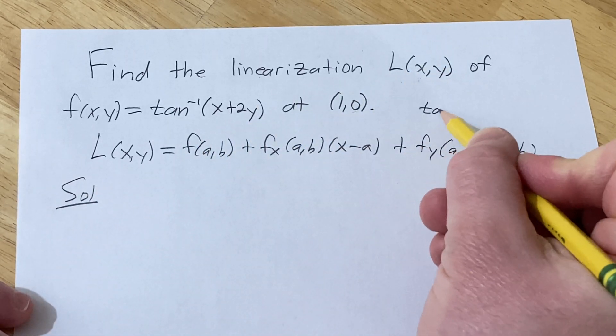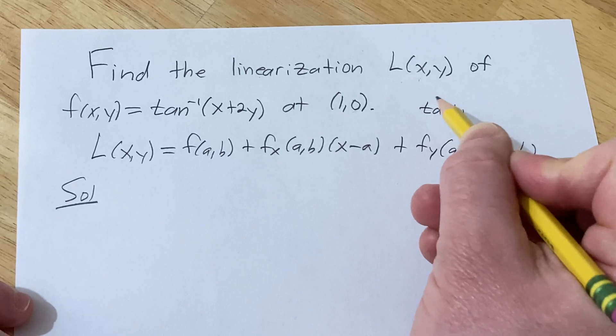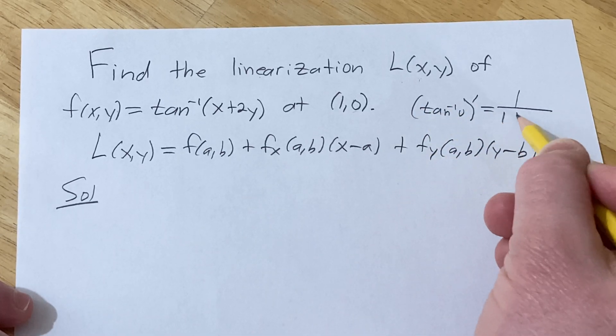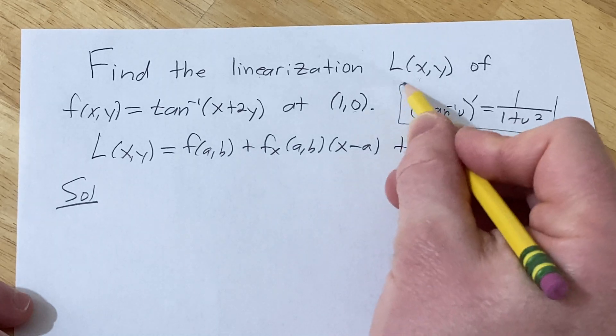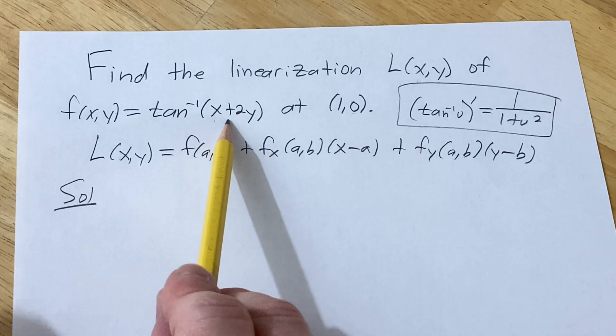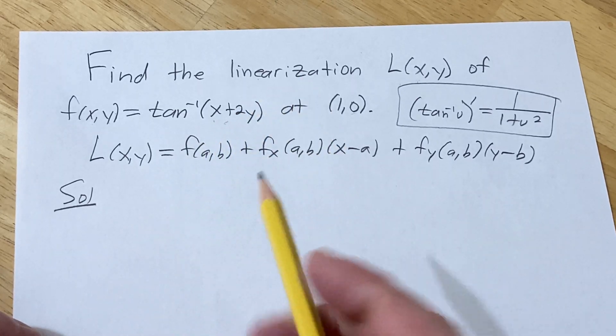Recall, if you have tan inverse of u and you take the derivative, it's 1 over 1 plus u squared. So we're going to use this formula as well. However, in this problem, it's not just u, it's x plus 2y, so we will have to use the chain rule.